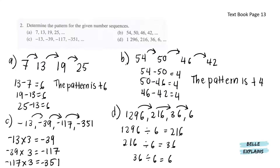Next, for B, we have 54, 50, 46, 42. 54 minus 50 gives us 4. 50 minus 46 gives us 4. And 46 minus 42 gives us 4, which means the pattern is minus 4 from the previous number.